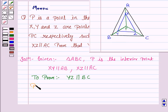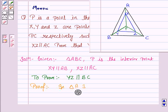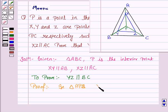So, let's now start the proof. Now, in triangle APB XY is parallel to AB. This is given to us. Therefore, by the basic proportionality theorem, that is BPT, AX upon XP is equal to BY upon YP.